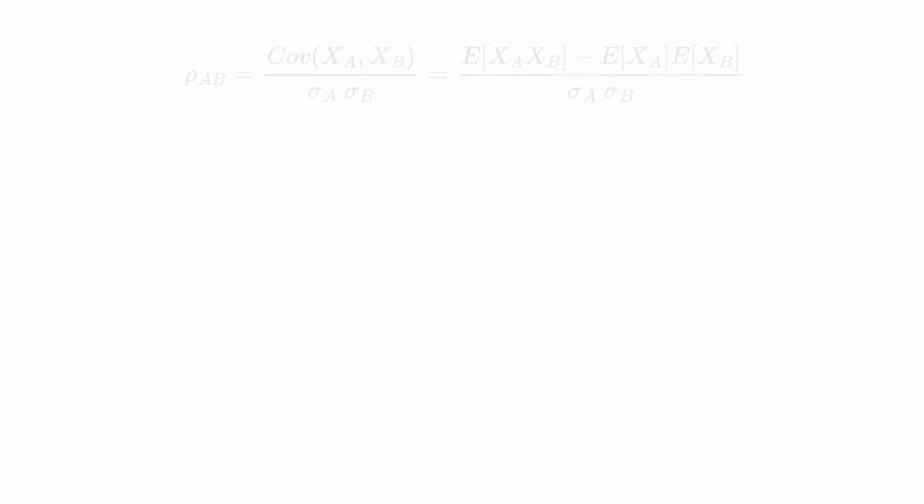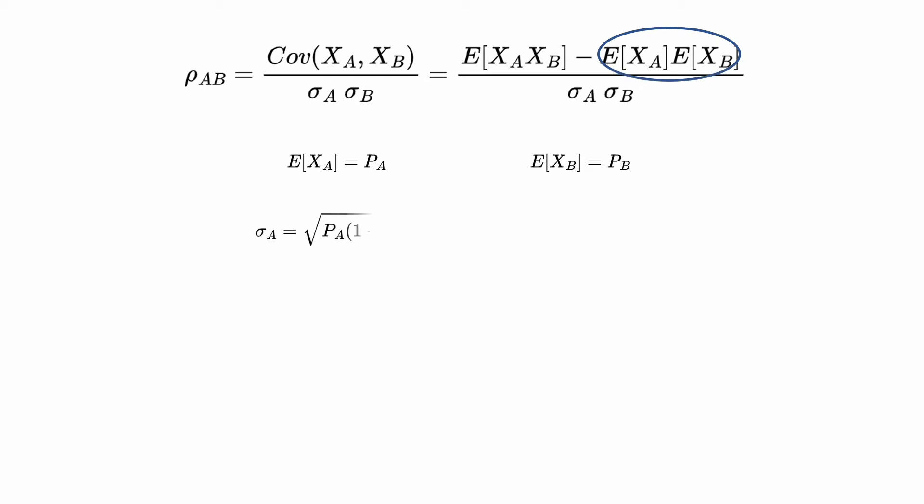Now that we have the expected values of xa and xb, as well as their standard deviations, all that's left is the expected value of the product. Let's simply expand it by probability. The expected value of the product is the weighted sum of all the possible outcomes.